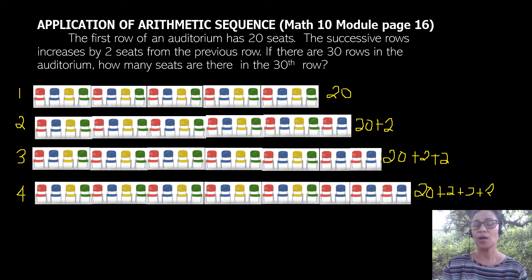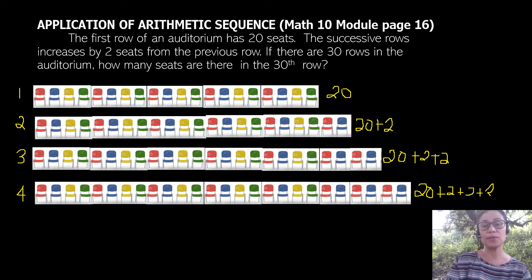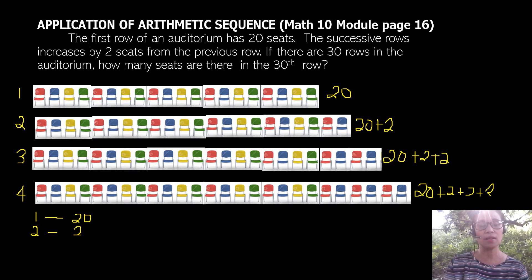Now, with this data, we can already see or recognize a pattern. Let's organize our data. For the first row, we have 20 seats. For the second row, we have 20, then plus 2.